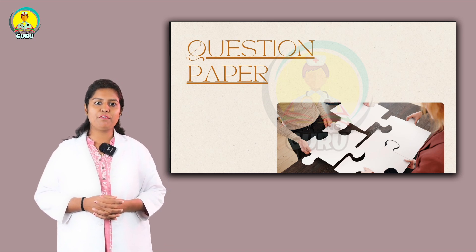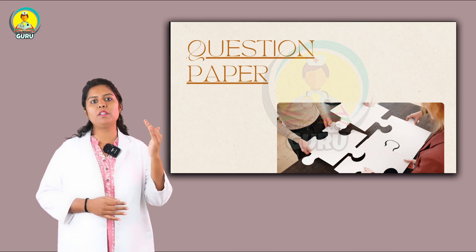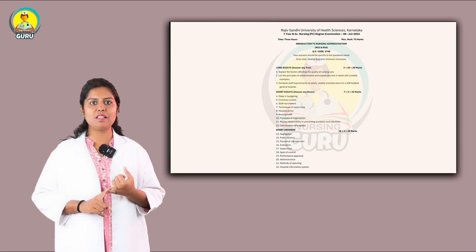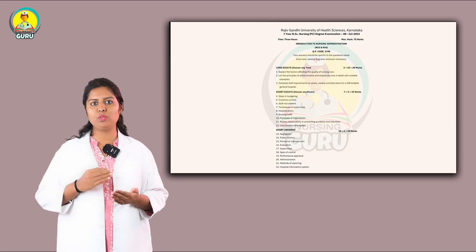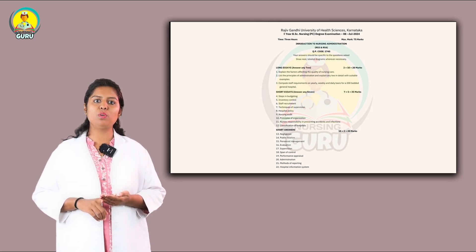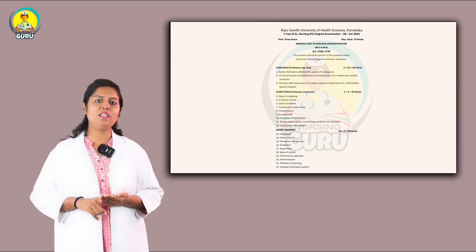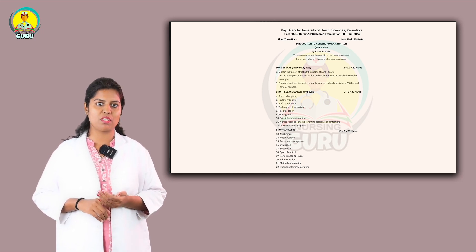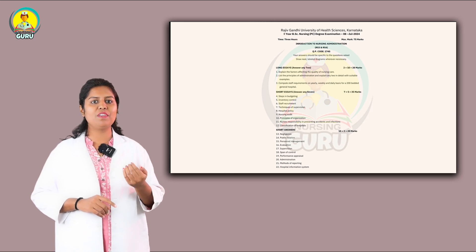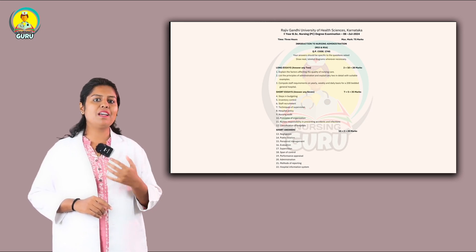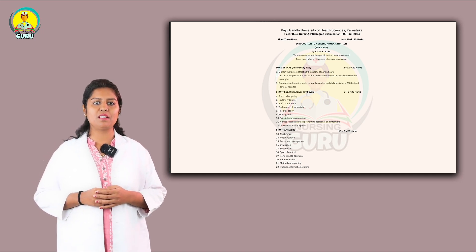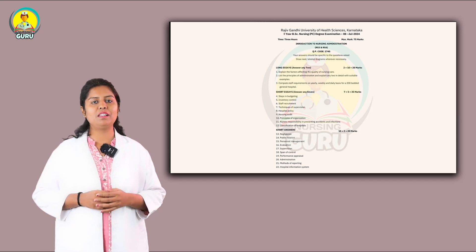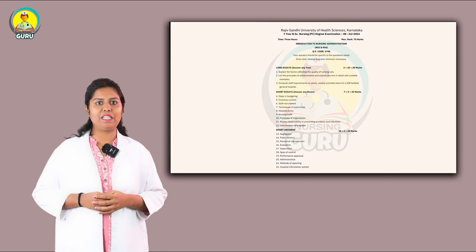The question paper is for 75 marks and you get 3 hours to write, so time management is very important. The paper is divided into three sections: long essays, short essays, and short answers. For long essays, there are 3 questions and you need to answer only 2 — total 20 marks. For short essays, there are 9 questions and you need to answer 7, so 2 are optional. For short answers, there are 10 questions and you must answer all 10 — each for 2 marks, totalling 20 marks.